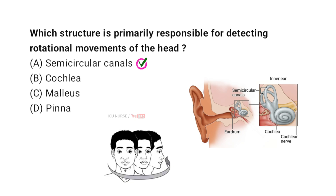This movement bends the hair cells, sending signals to the brain. The brain then uses this information to understand the direction and speed of the head's rotation. This helps maintain balance and coordinate movements.